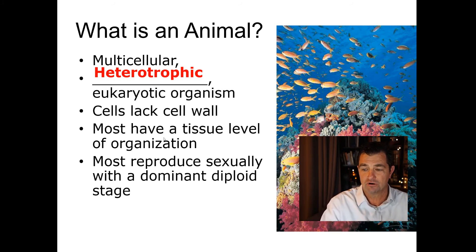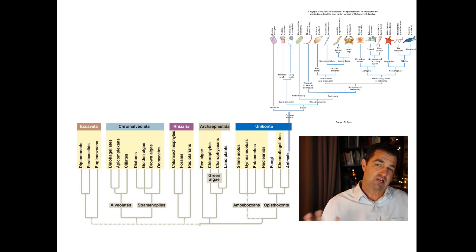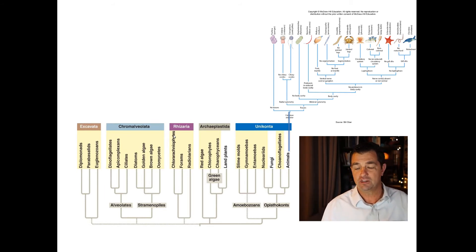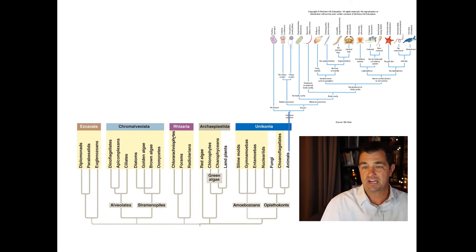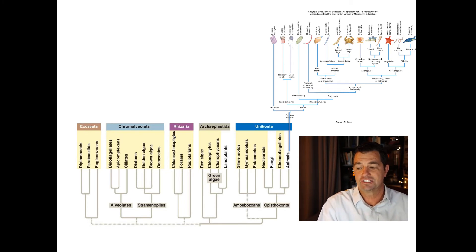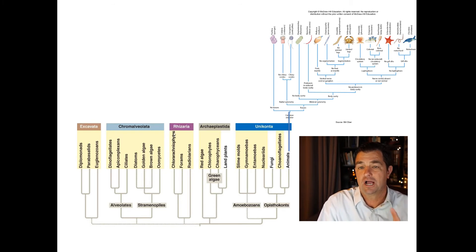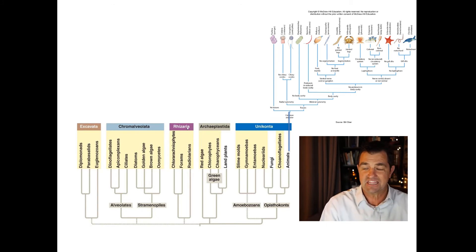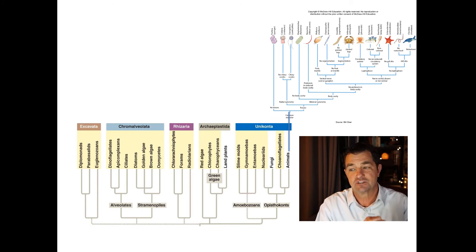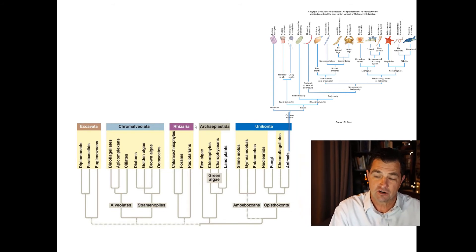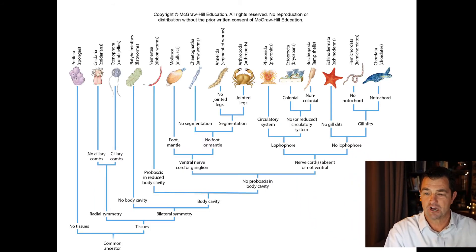If we go back to the cladogram we looked at before — covering domain Eukarya, dinoflagellates, diatoms — we can see where Kingdom Animalia fits in the bigger picture. Extending that line gives us another cladogram of the invertebrates we'll be talking about.